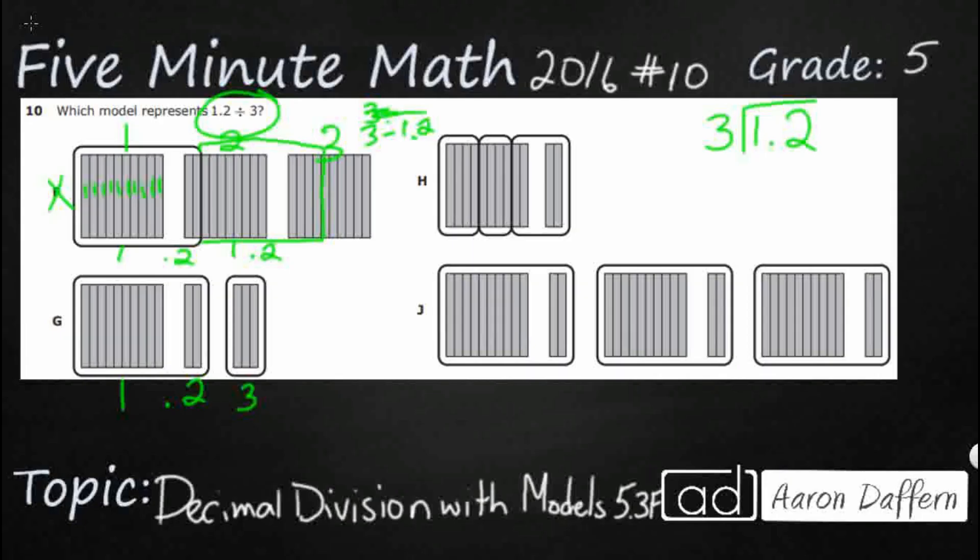Right? So like we're adding 1.2 and this is 0.3. So if you're adding 1.2 and 0.3, it looks like you're getting a total of 1.5.